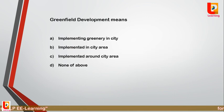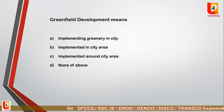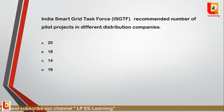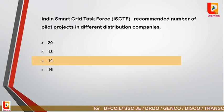Question 14: Greenfield development means — option A: implementing greenery in the city; option B: implemented in the city area; option C: implemented around the city area; option D: none of the above. Correct answer is option C: implemented around the city area. Question 15: The Indian Smart Grid Task Force recommended how many pilot projects in different distribution companies — option A: 20; option B: 18; option C: 14; option D: 16? Correct answer is option C: 14.